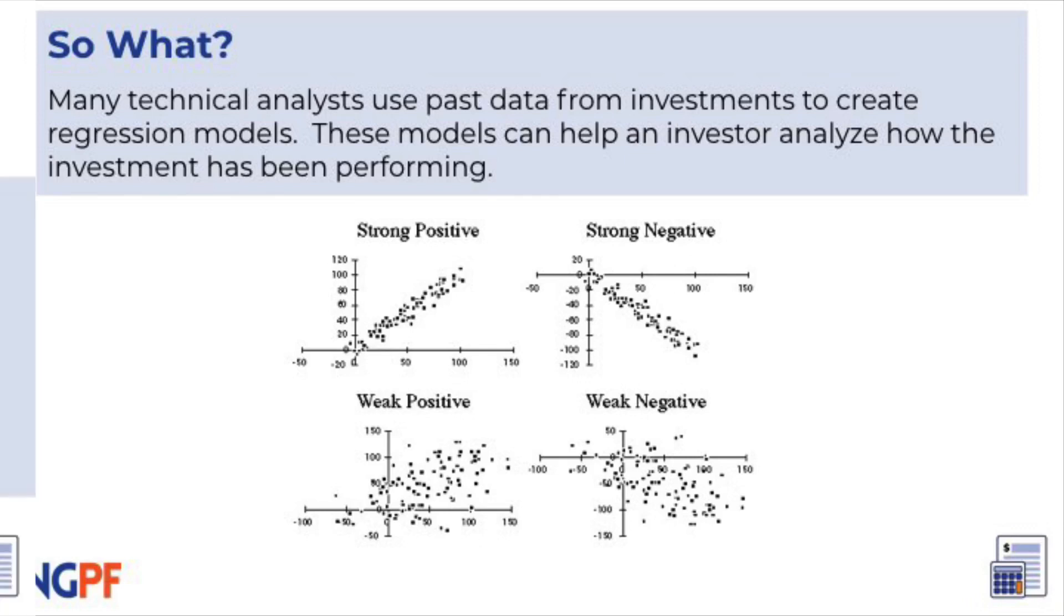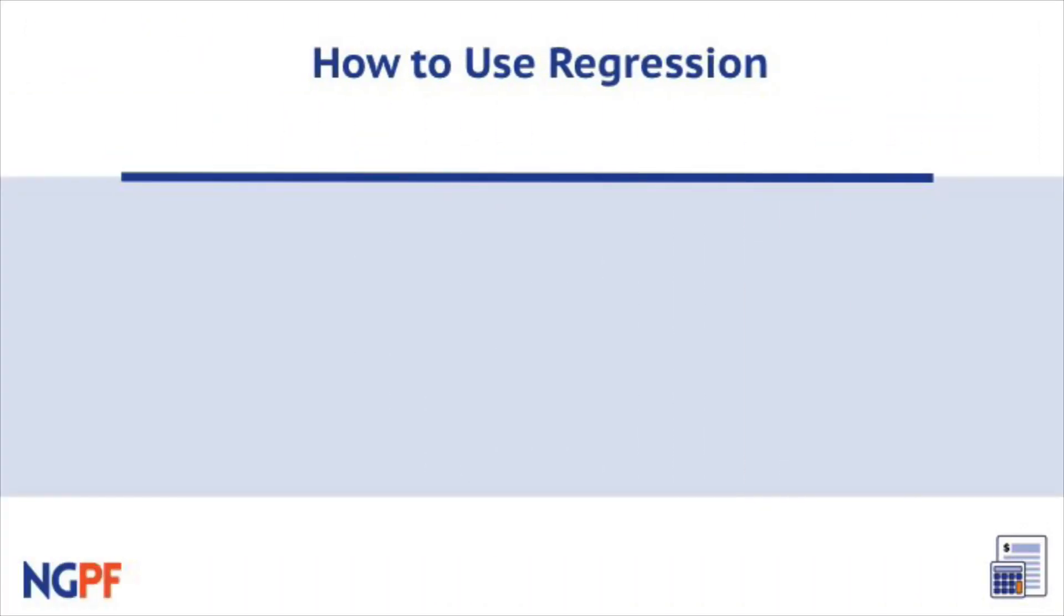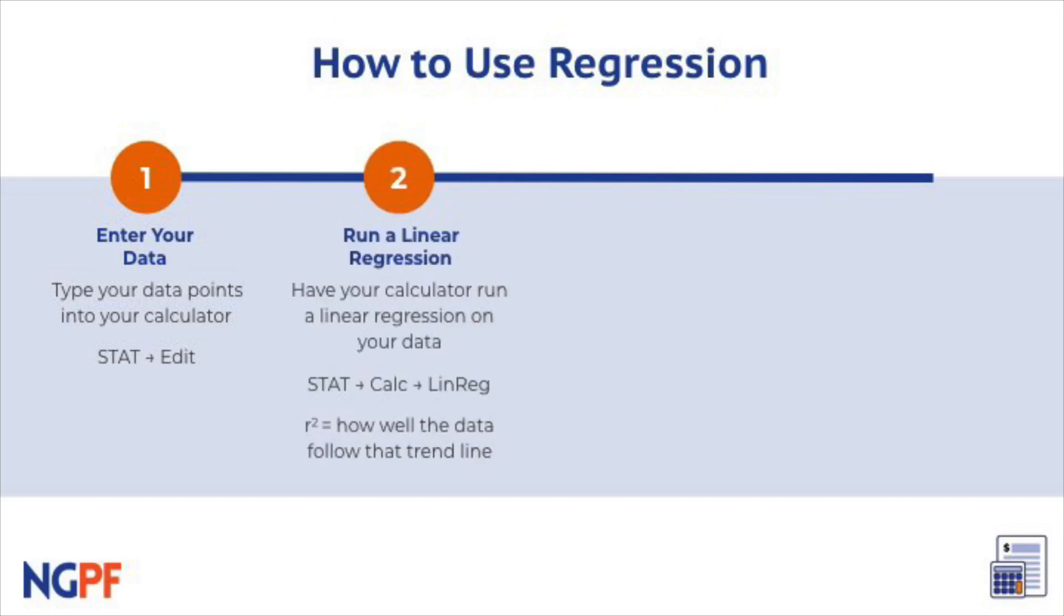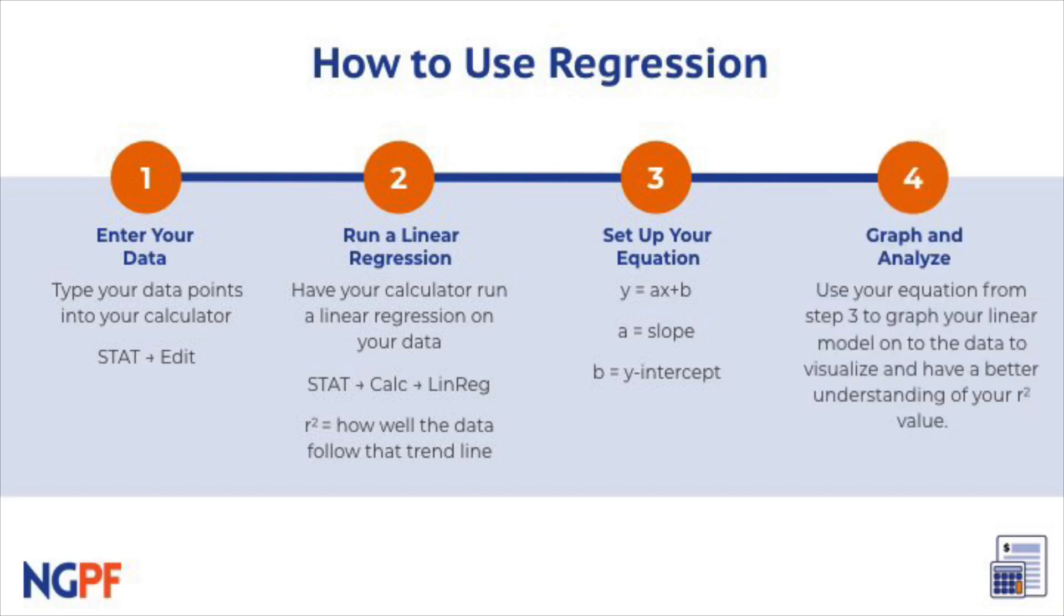Let's review how to use regression. You'll first want to enter your data points into your calculator using the STAT button. Then, you can run a linear regression by clicking on STAT, CALC, then LIN REG. You will then get some results, like your R-squared value. Next, you can set up your equation in Y equals AX plus B form. Lastly, you can graph your linear model onto the data to visualize and have a better understanding of your R-squared value.